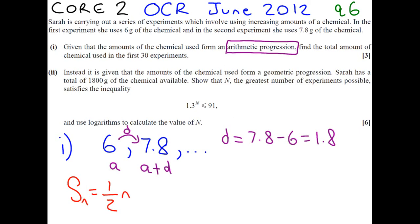And the formula is a half times n curly brackets, so that's just another way to write big brackets, 2A plus n minus 1D.